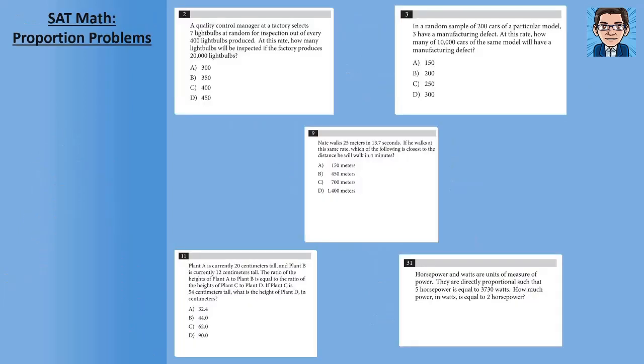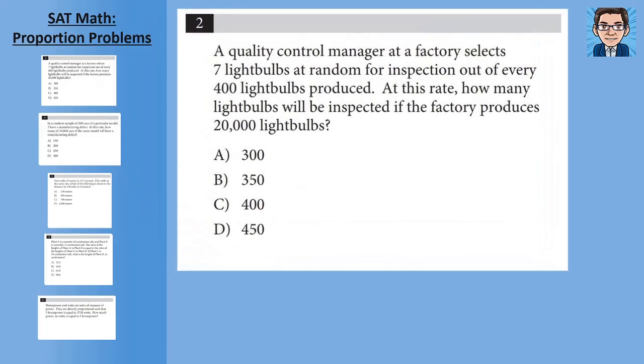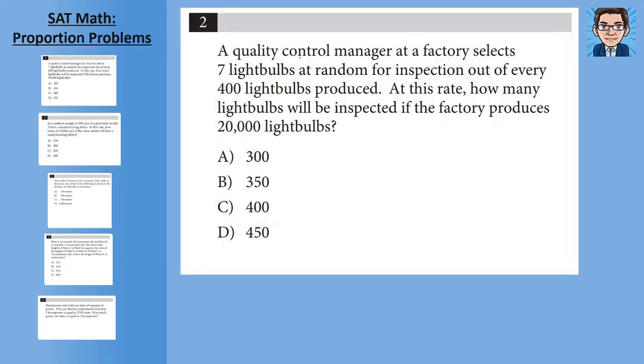Okay, let's take a look at these five sample problems having to do with proportions. Alright, problem one says a quality control manager at a factory selects seven light bulbs out of every 400 light bulbs that he's going to inspect. At this rate, how many light bulbs will be inspected if the factory produces 20,000 light bulbs? So let's set up our proportion. In the numerator, I'm going to put the amount selected and in the denominator, I'm going to put the amount produced. And I always like to write these out just to keep track and make sure that I'm putting the right thing in the numerator and the right thing in the denominator.